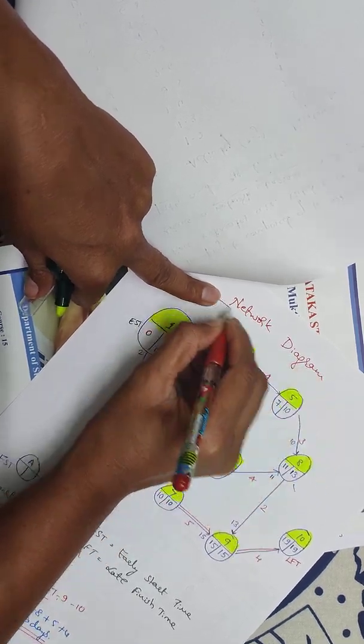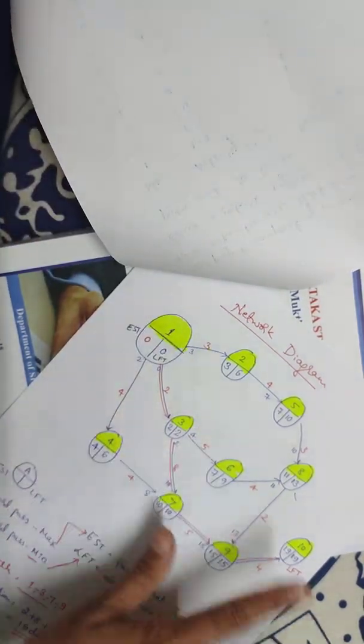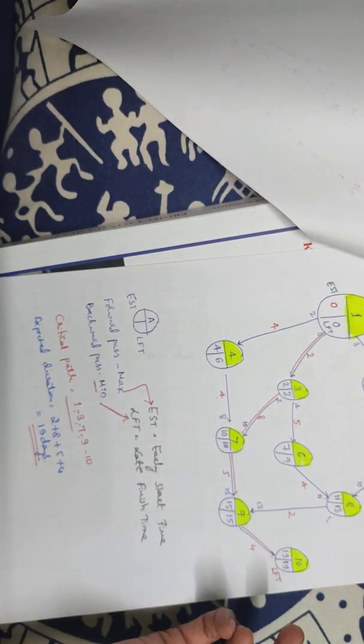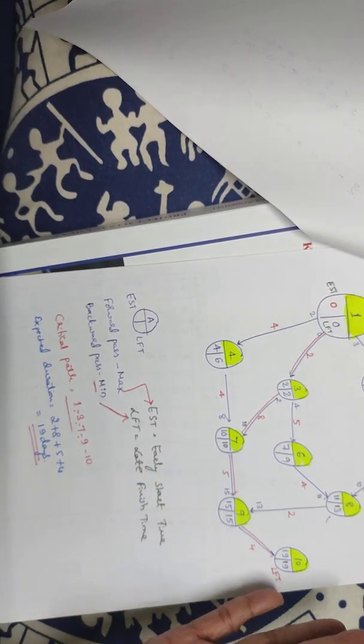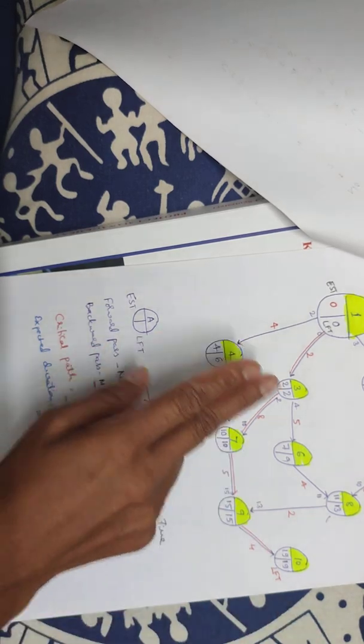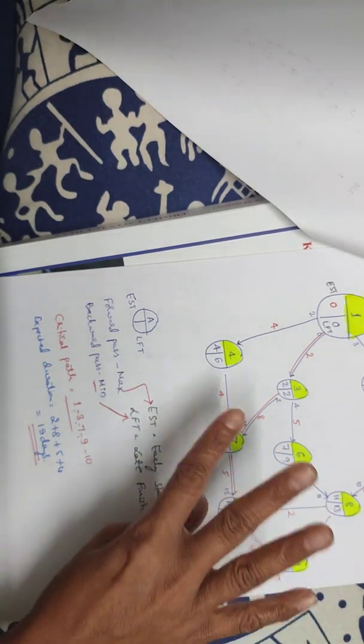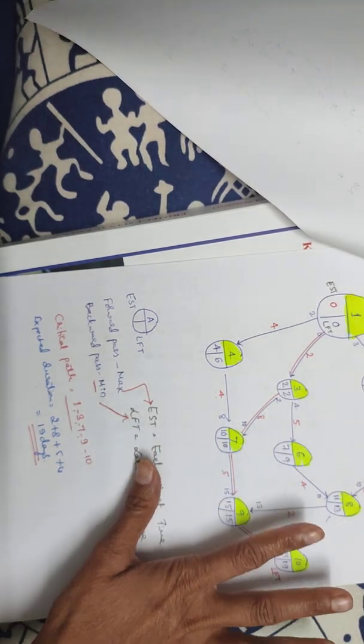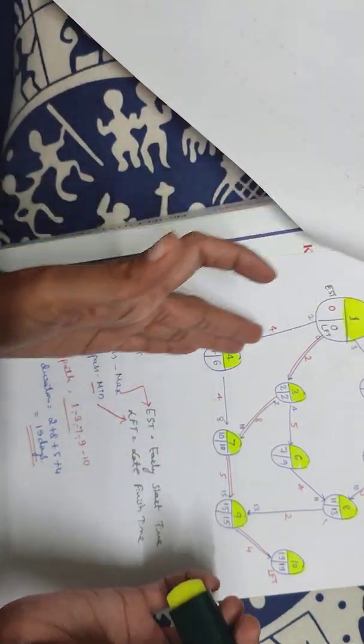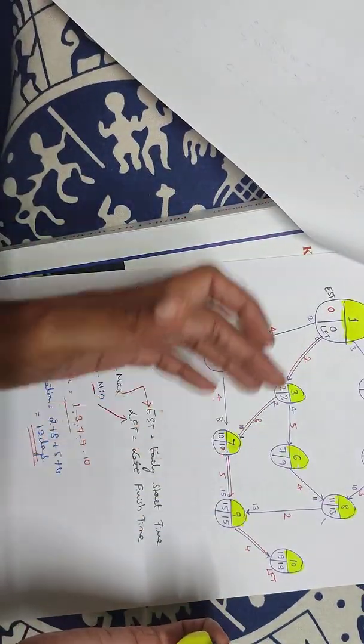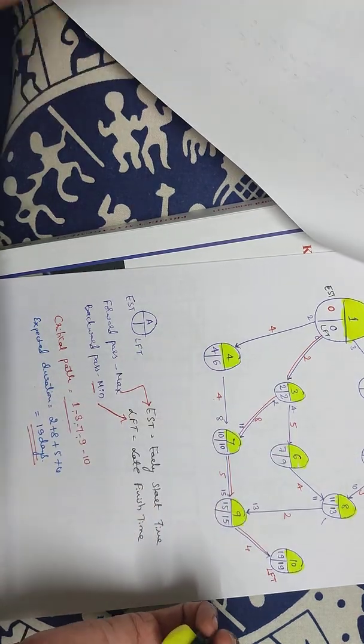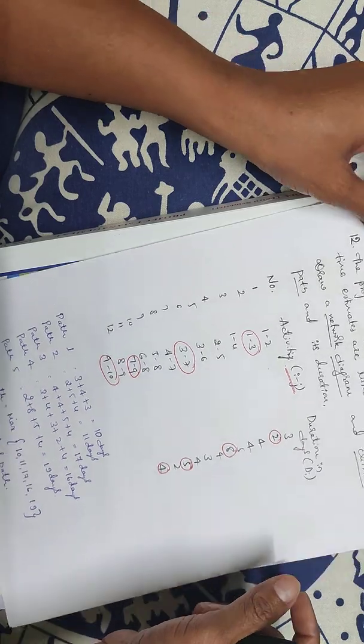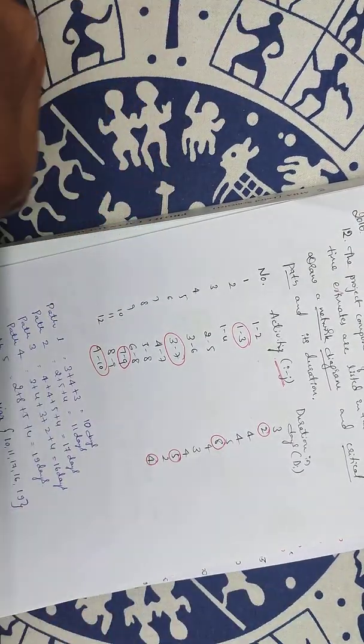We are going to revise the logic. Forward pass is maximum of values. Backward pass is minimum of values. First complete the left side, then complete the right side column. This is how the problem solution works in project management. If you have any doubts, please comment. Thank you.